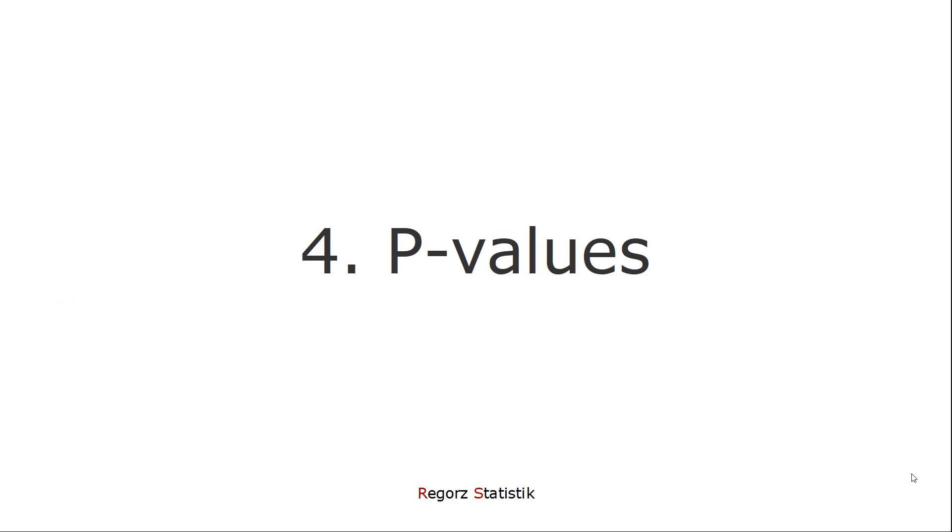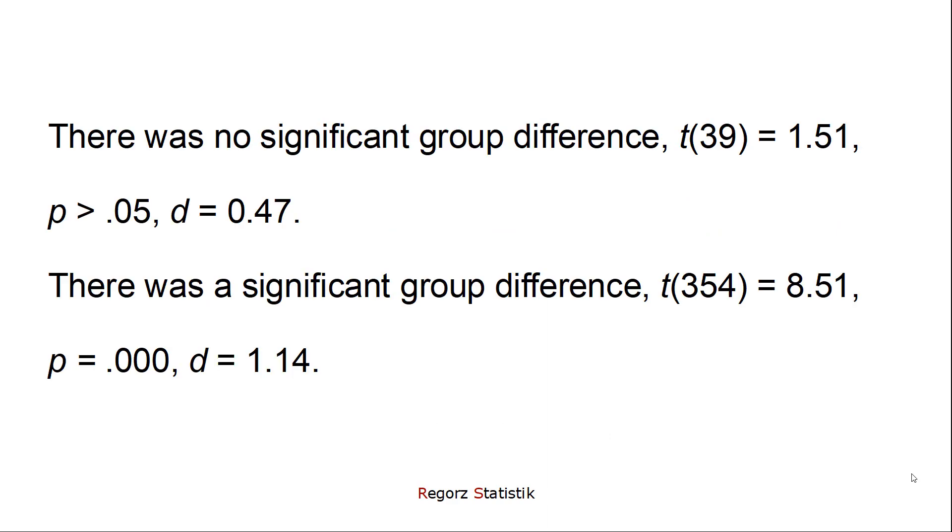Next, p-values. Here there are two types of errors that I see quite frequently. The first one, not reporting the exact p-value in the text but just larger than 0.05 or smaller than 0.05 or something like that. The second common error is reporting a p-value of 0.000. That's not allowed. In that case and only in that case you have to write smaller than 0.001. So here are the correct versions.